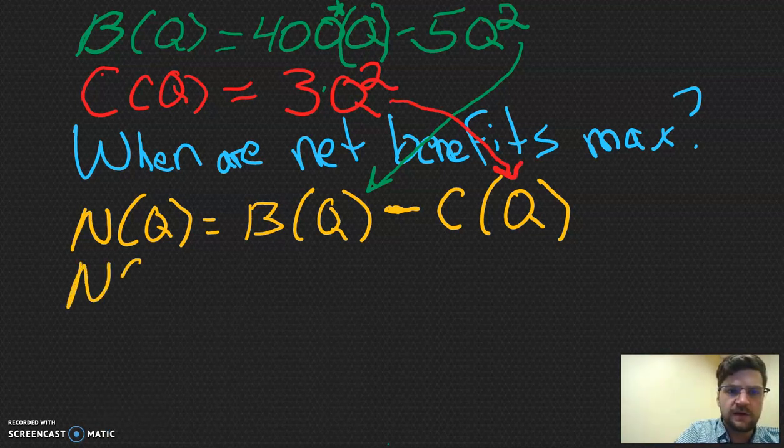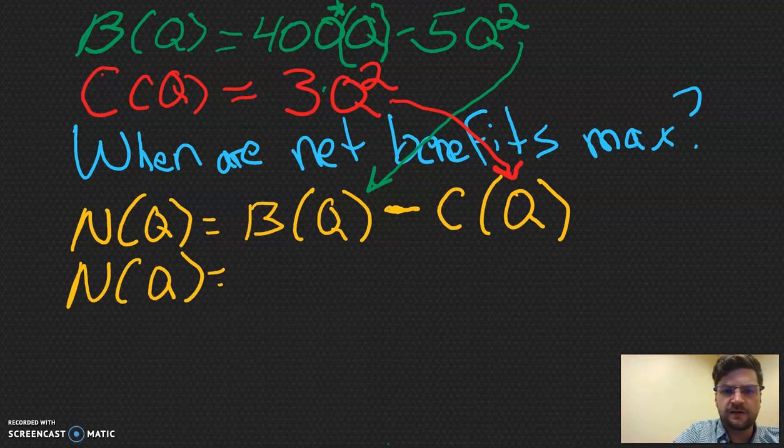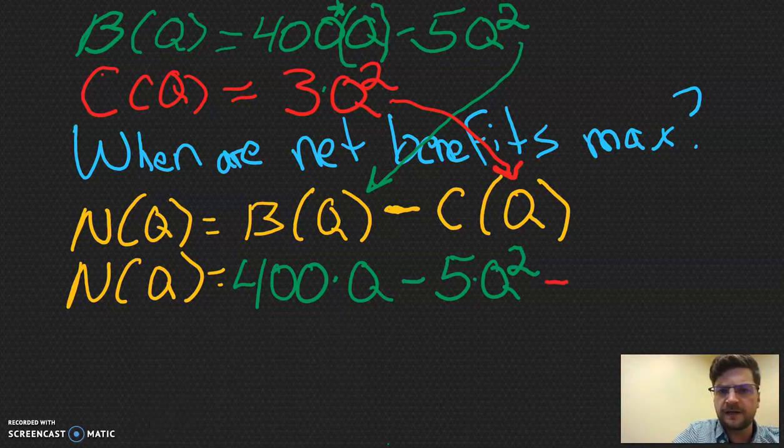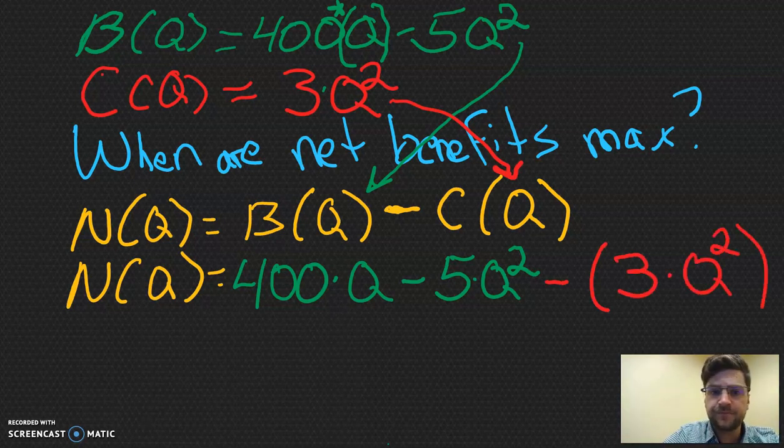So let's go ahead and plug in the benefit of Q, the green part, and then plug in the cost of Q, the red part. So our next line would be N of Q is equal to what? Go ahead and try this on your own. Pause the video. 400 times Q minus 5Q squared, and that's times Q. And then this is all minus 3 times Q squared.